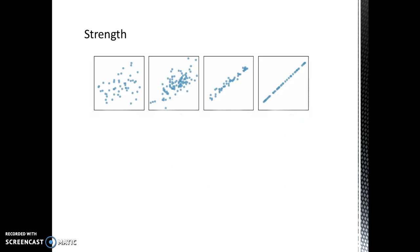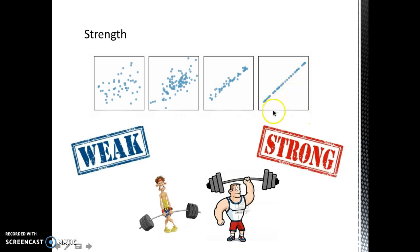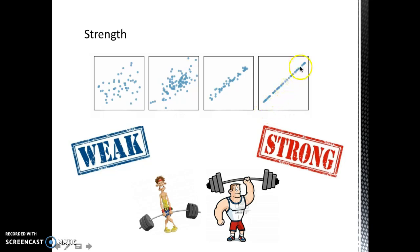The first feature to look for in a scatterplot is how strong the relationship is. At one extreme, do the points appear tightly clustered in a single stream — whether it's straight, curved, or bending all over the place? Or at the other extreme, does the swarm of points seem to be just a vague cloud where it's hard to discern any trend or pattern? Discuss whether you see a weak, moderately weak, moderately strong, or strong relationship. But a strong relationship doesn't mean the points have to form a straight line.